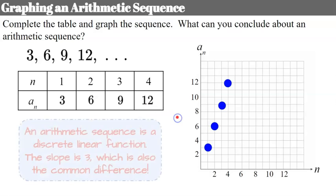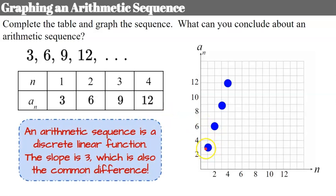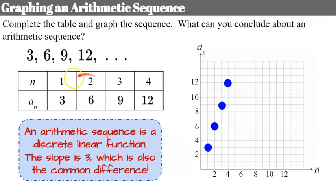Welcome back. Hopefully you determined this is a discrete linear function with a slope of 3. That slope of 3 is also our common difference — add 3, add 3, add 3. The slope is rise 3 over run 1. It's discrete because you would not have a term 1 and a half — we have whole number integer inputs: term 1, 2, 3, 4. You can't have 1.5 or 1.1, making it a discrete function, but it's a linear pattern with a constant rate of change of 3.